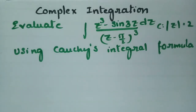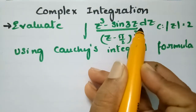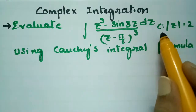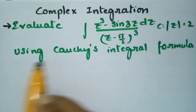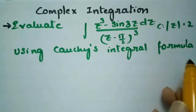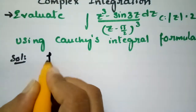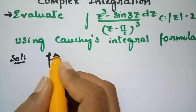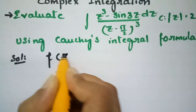Today's problem is from complex integration. We are going to evaluate the integral of (z³ − sin3z) divided by (z − π/2)³ dz, where C is |z| = 2, using Cauchy's integral formulae. Here f(z) is clearly given as z³ − sin3z.